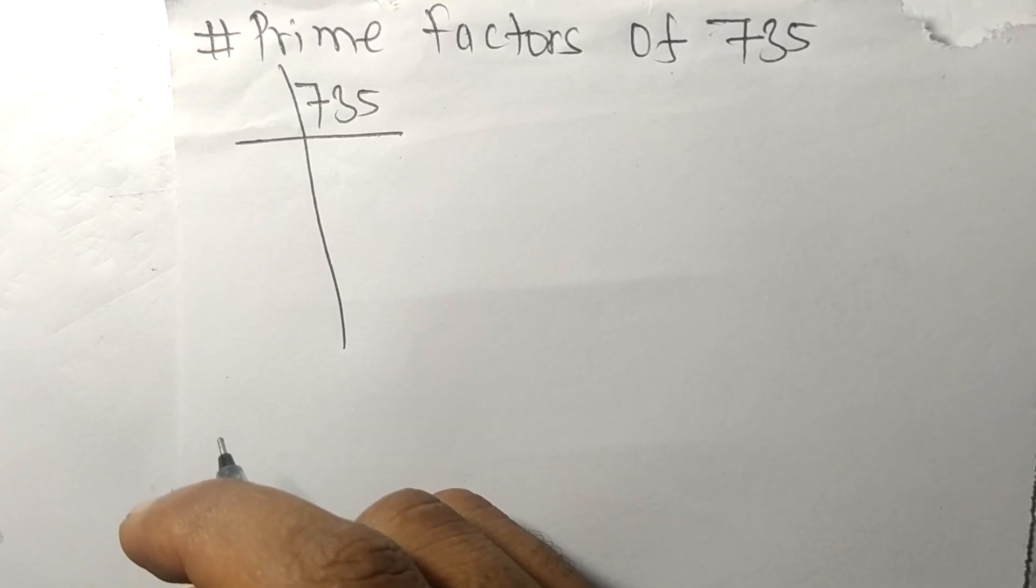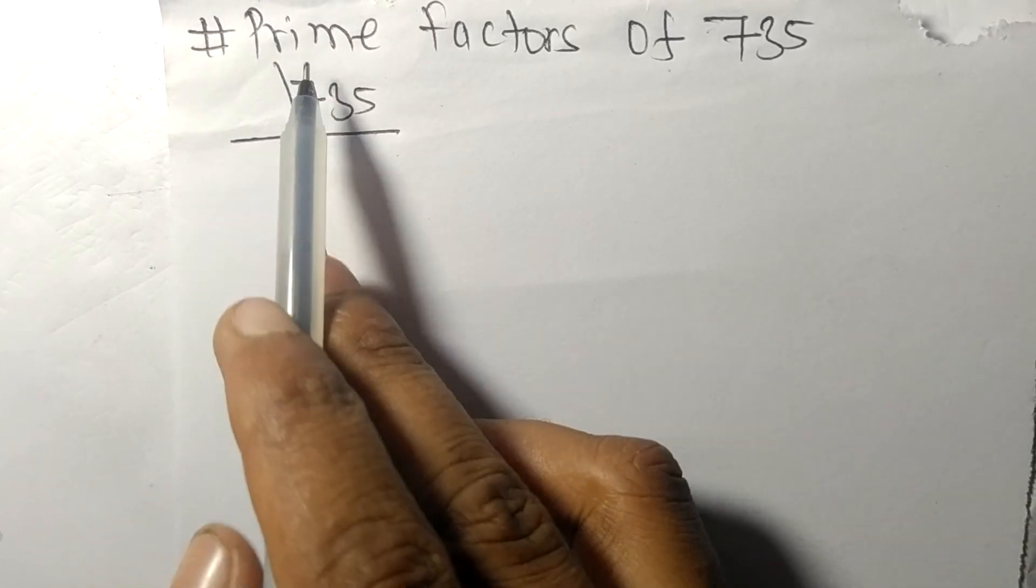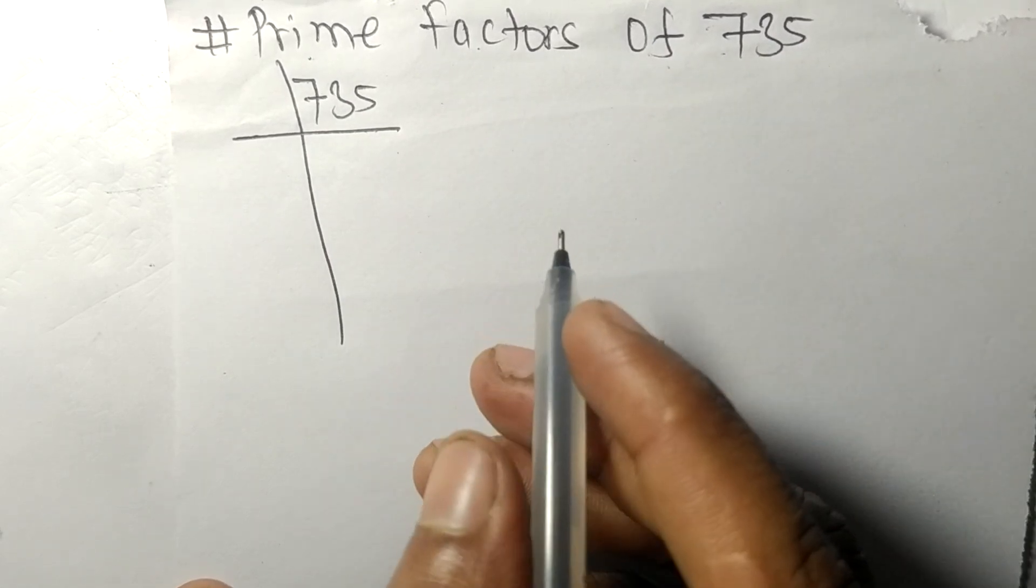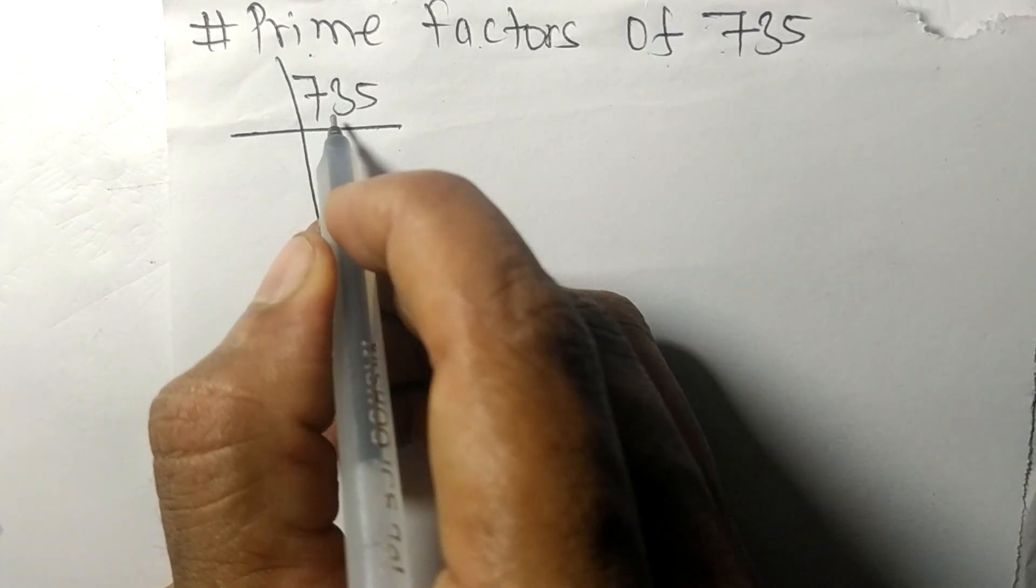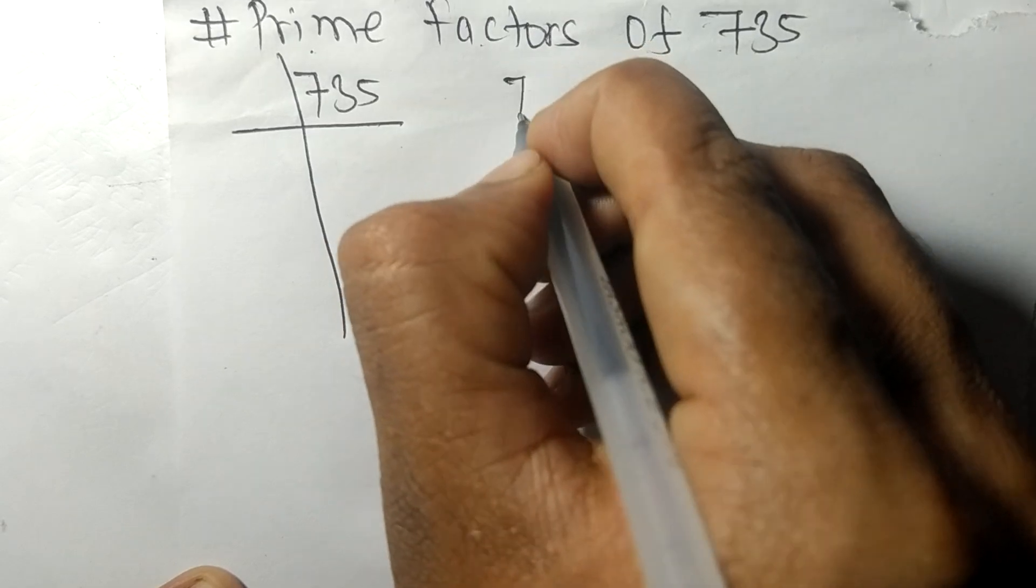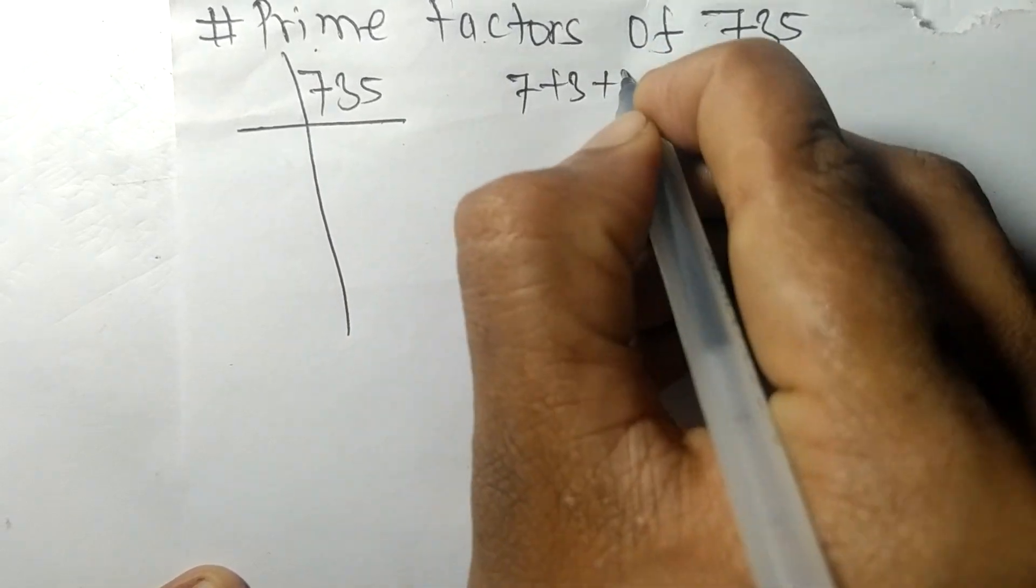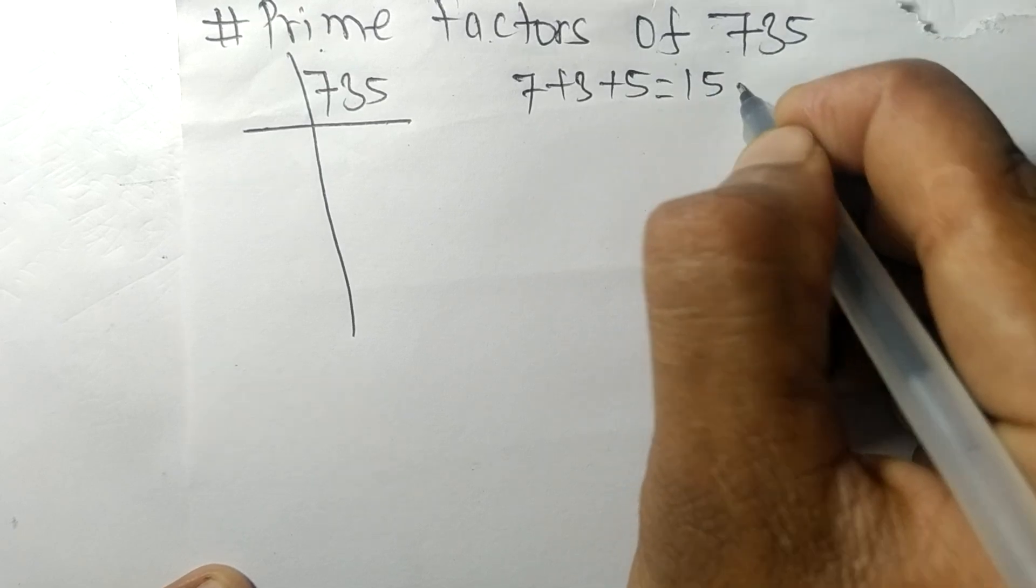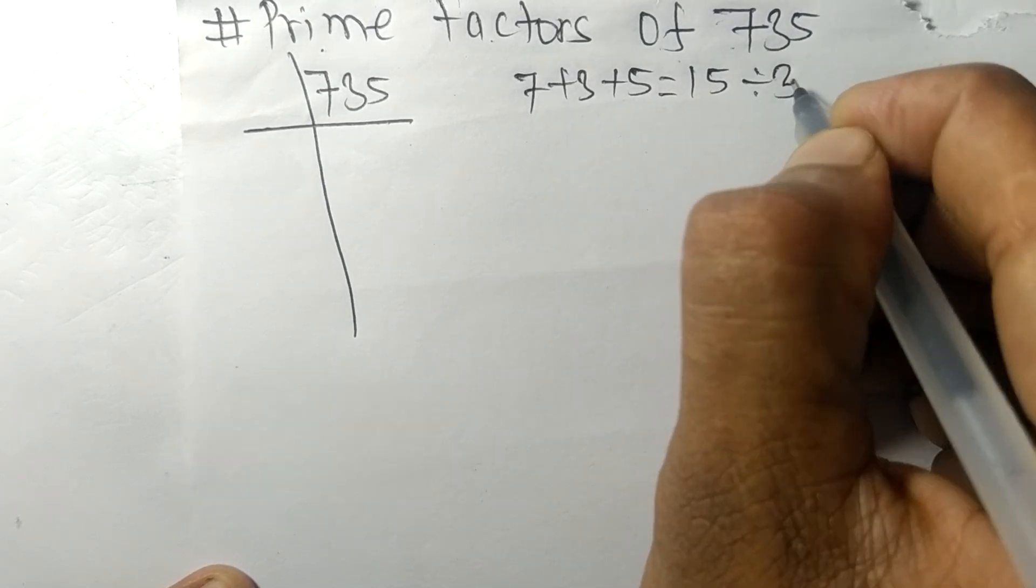Today in this video, we shall learn to find the prime factors of 735. When we add all these numbers—7 plus 3 plus 5—we get 15, and 15 is exactly divisible by 3.